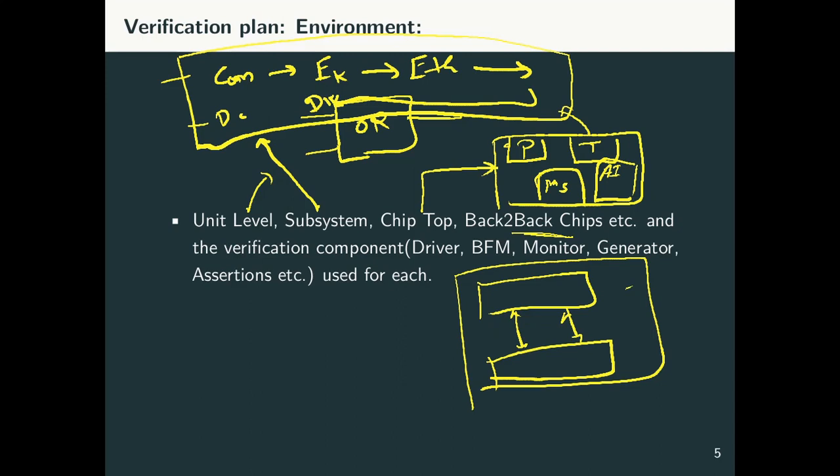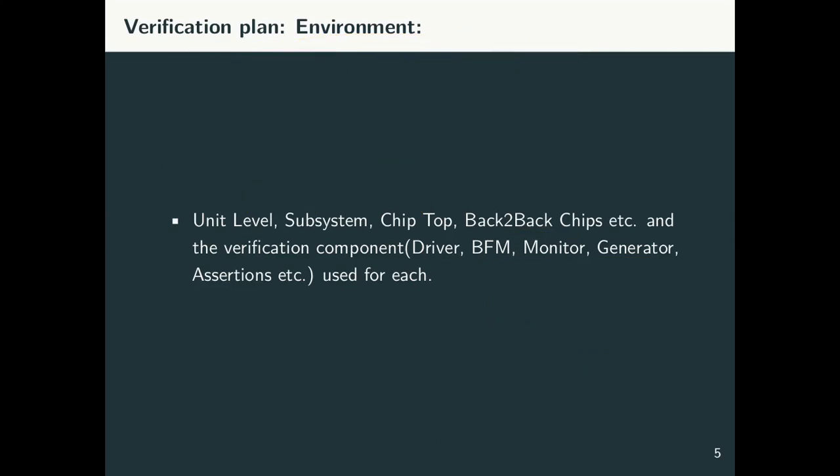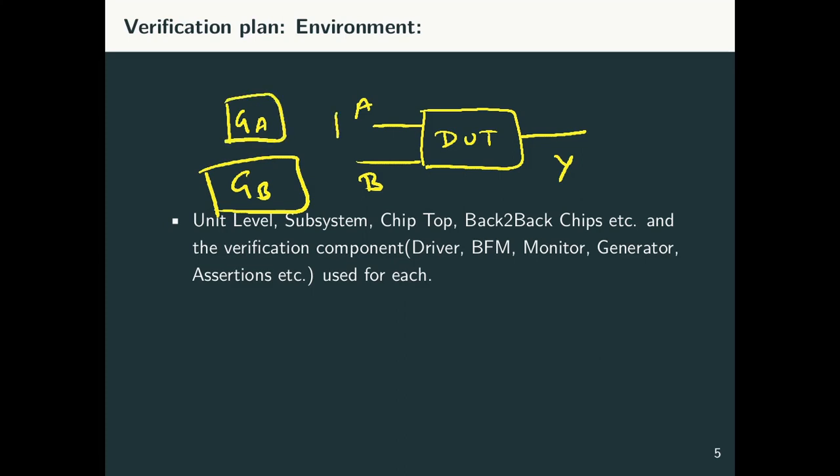All this goes as a part of your environment definition. In our case, we had a unit level environment, which is our DUT, which has two inputs A and B, one output Y. Now we have a generator for A, generator for B, which is generating the data. Then we have a driver for A and a driver for B. We have a driver for Y. Then we have a scoreboard.